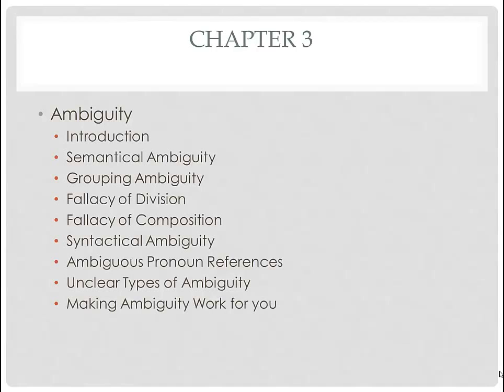Getting back to the two fallacies: the first one is what's known as the fallacy of division. This occurs when a person thinks that what is true of a group of things collectively automatically or necessarily holds true of the things taken individually. In other words, a person uncritically assumes that because something is true of the whole, it must be true of the parts — hence the name 'division,' because you're dividing things.